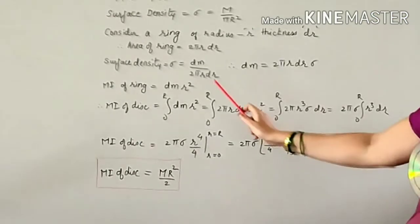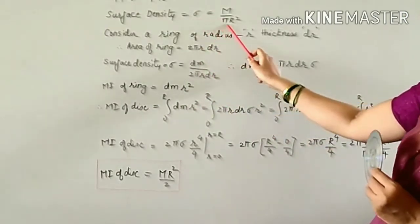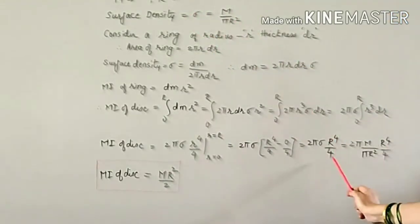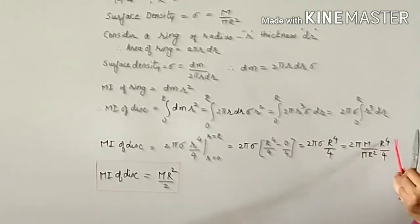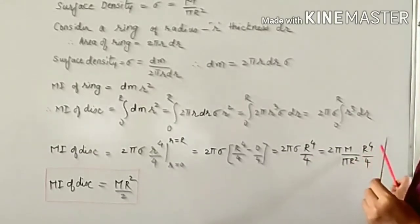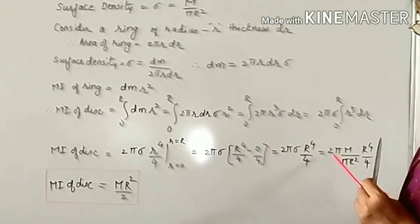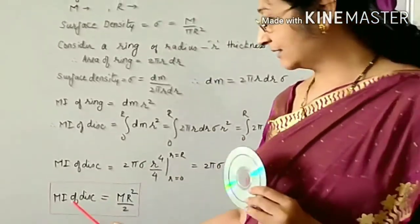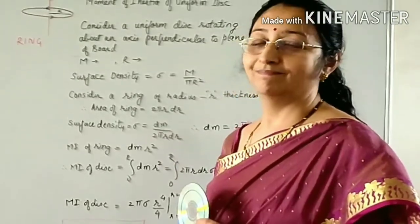Substituting the value of sigma, σ = M / (π·R²), we get I = 2π · (M / π·R²) · R⁴/4. Cancelling π, R², and the factor of 2 with 4, we get the final answer: the moment of inertia of the disc is I = M·R²/2. Thank you.